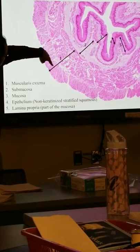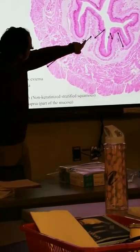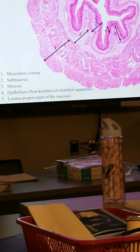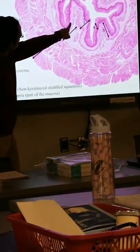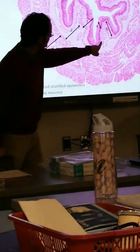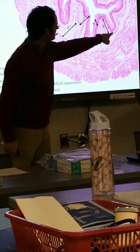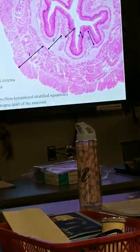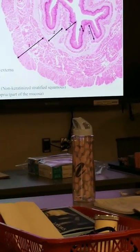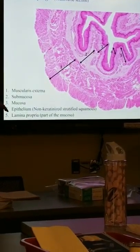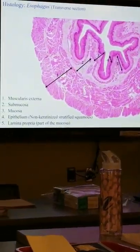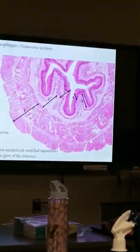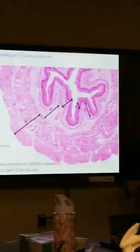You can see the muscularis externa; number two is showing the submucosa; the thin layer of muscle is the muscularis mucosa; then the lamina propria; and then the epithelium.